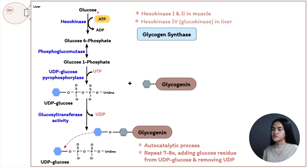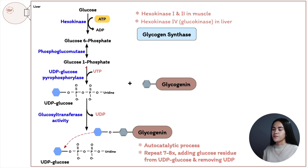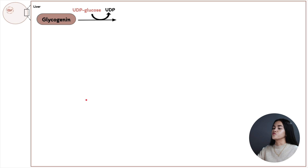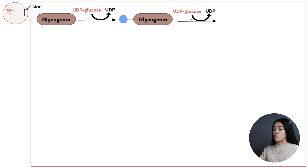To summarize: glucose is converted to glucose-6-phosphate by hexokinase. Glucose-6-phosphate becomes glucose-1-phosphate. The sugar is then activated by adding UTP to produce UDP-glucose. UDP-glucose is added to glycogenin, removing UDP each time, repeated seven to eight times, after which glycogen synthase can take over.